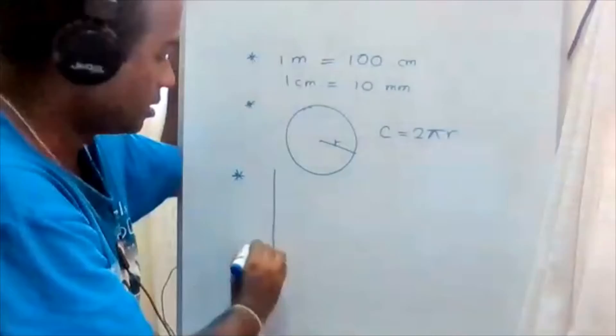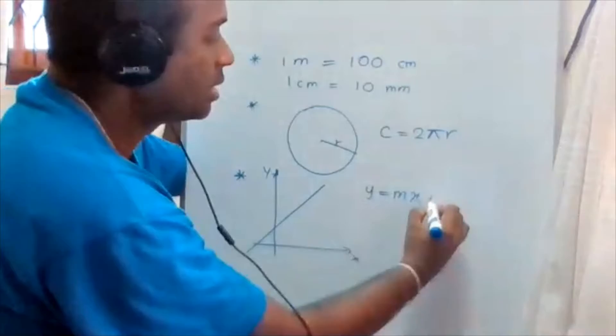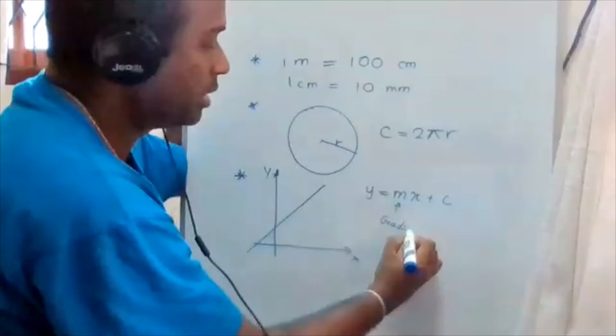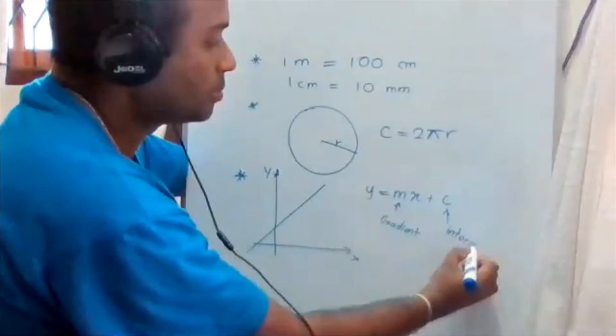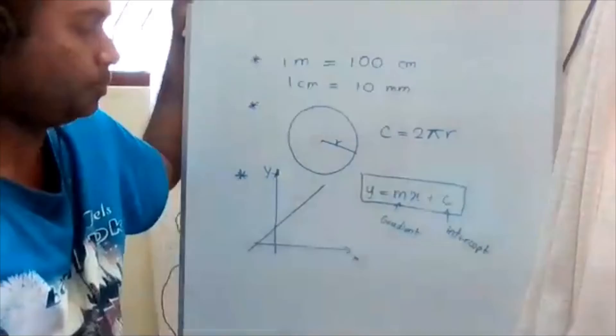Another important topic is straight lines on a Cartesian plane. The equation of a straight line is given by y equals mx plus c, where m is the gradient and c is the y-intercept. This is the standard format of the equation of a straight line.